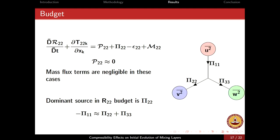Coming to the budget of the transverse fluctuation R22: the production term is zero because there are no mean flow gradients responsible for production in this component. Mass flux terms are negligible. The pressure dilatation is observed to be zero even in the compressible case. When all three diagonal components of the Reynolds stress tensor are summed, we recover the TKE budget, with pi representing pressure dilatation which is effectively zero. So the pressure strain term is extracting energy from the streamwise component U-squared (where production occurs) and redistributing it into V-squared and W-squared. We need to investigate how this redistribution works differently in the compressible versus incompressible case.